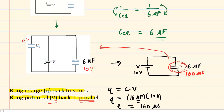Before continuing backwards, calculate any missing or unknown quantities. Here we have a capacitance of 10 microfarads but don't have the charge, so we use charge equals capacitance times potential. Multiplying 10 microfarads by 10 volts gives us 100 microcoulombs. This is the correct answer for the charge on C1 — that is the correct answer to part A.